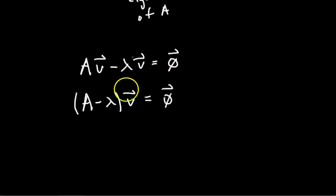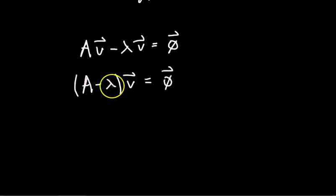But wait a second—here in the parentheses we have a matrix minus, remember lambda is just a scalar. So that's not defined, right? You can't do a matrix minus a scalar. If you're gonna subtract matrices together, they have to have the same dimensions. So this is not defined. This doesn't work.